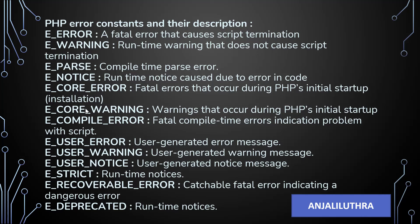E_CORE_ERROR is a startup-time error. E_CORE_WARNING is a startup-time or compile-time warning. Then there is user error, where you as a programmer can generate an error message. You can also create a user warning message and a user notice message. E_STRICT is for runtime notices created during execution. We also have recoverable error — a catchable fatal error indicating a dangerous error — which means we can deal with it through exception handling and try-catch. And deprecated is for runtime notices.